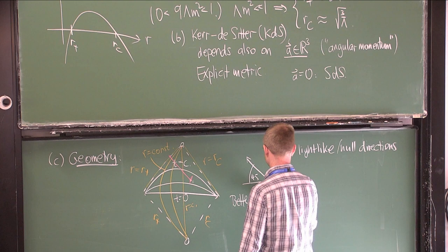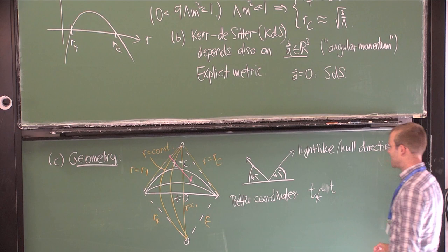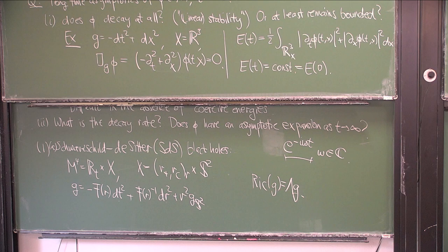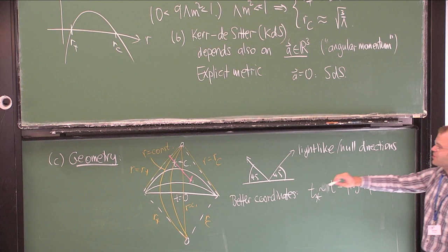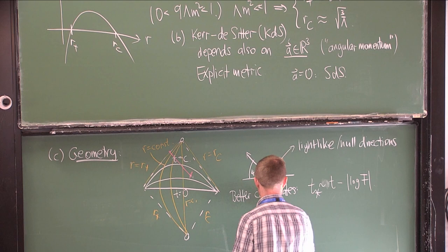Better coordinates can be introduced. It suffices to change the T coordinate to something called T*, which is roughly T plus/minus the absolute value of the logarithm of the function F. Since F is zero near the two horizons, this is a singular coordinate change near the horizons, giving you the chance to de-singularize the geometry.